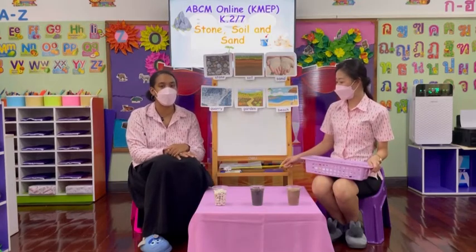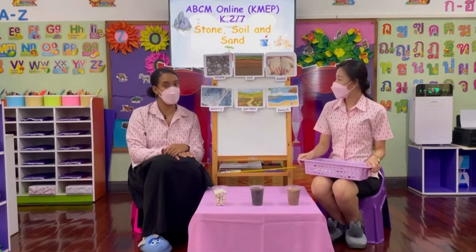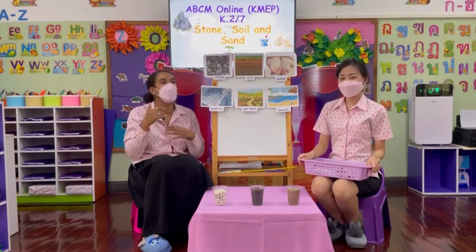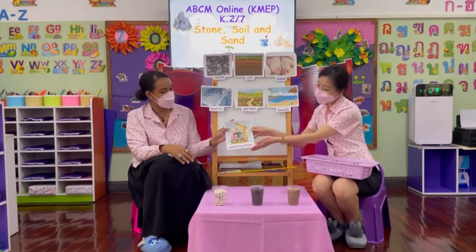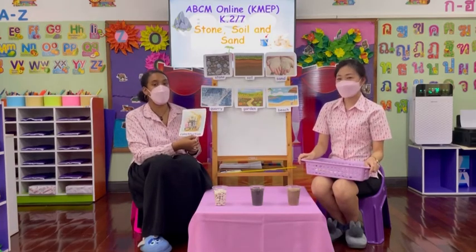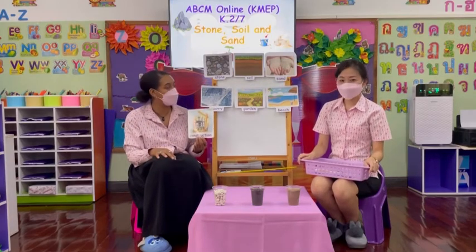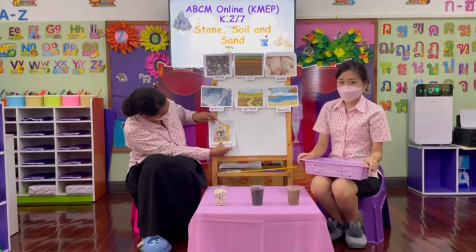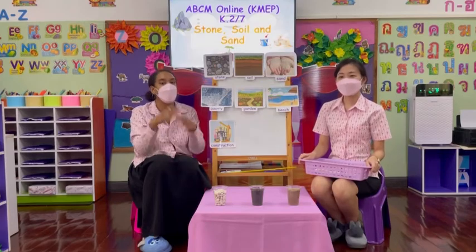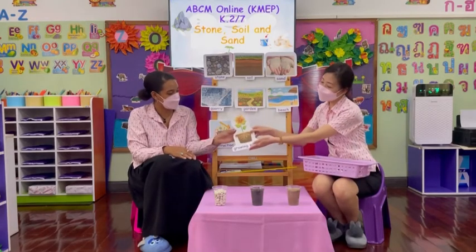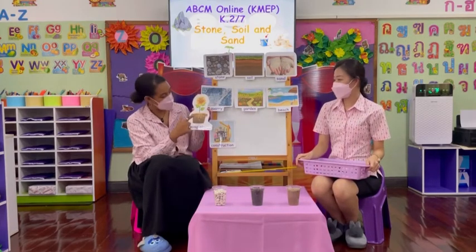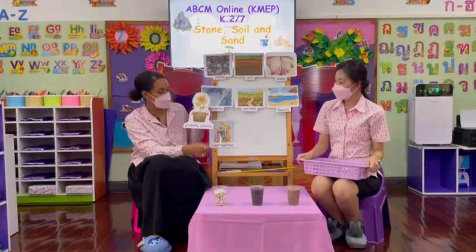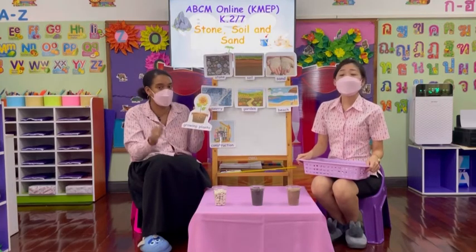Now we're going to look at some different uses for our stone, soil and sand — what do we use them for? Starting with stone: we use it for construction. Construction is when we build different things, like houses or roads using stone. So stones are very useful for construction. Next, soil: we can use soil for growing plants. Soil has lots of different nutrients and locks in water, so we can grow flowers and vegetables using soil.